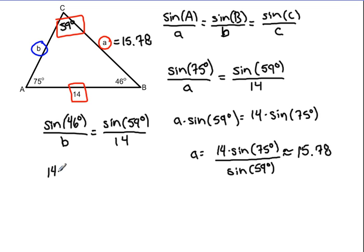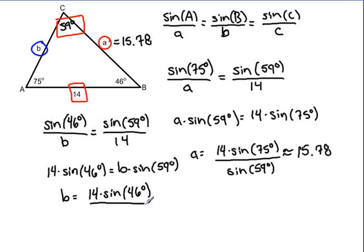We can cross-multiply this proportion, and we will have 14 times the sine of 46 degrees is equal to B times the sine of 59 degrees. And solving for B, we get that B is equal to 14 times the sine of 46 degrees all over the sine of 59 degrees.